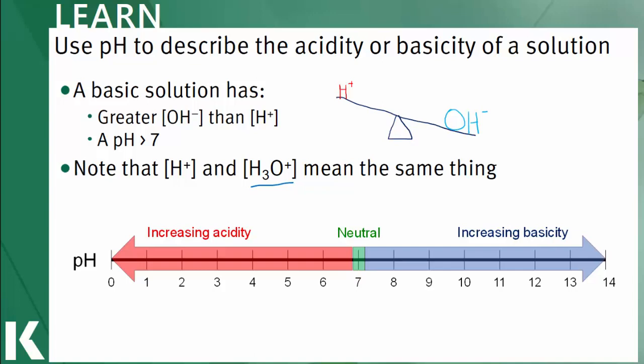We have this diagram at the bottom illustrating the pH scale. A pH from 0 to just under 7 indicates that the solution is acidic, or the concentration of hydrogen ions is higher than hydroxide ions. A pH of 7 is neutral, where the two concentrations are the same. A pH from just above 7 to 14 indicates basicity, or the concentration of hydroxide ions is greater than hydrogen ions.